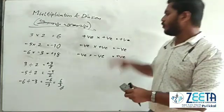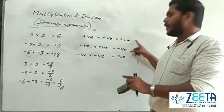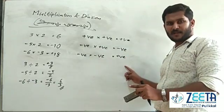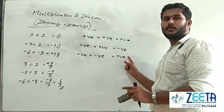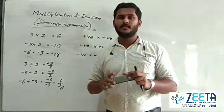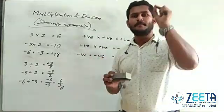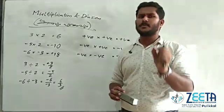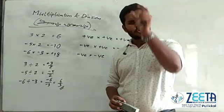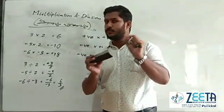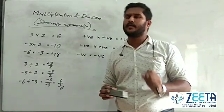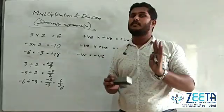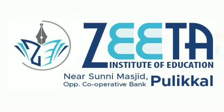For multiplication and division: plus times plus is plus; minus times minus is plus; plus times minus is minus; minus times plus is minus. Two same signs give a positive, two different signs give a negative. I will see you in the next video.